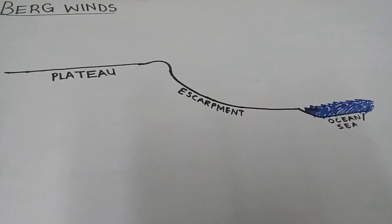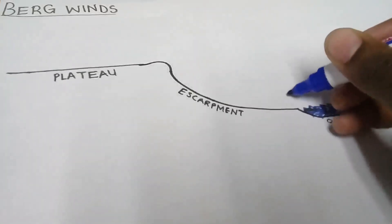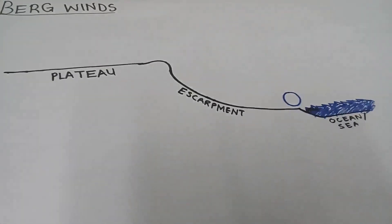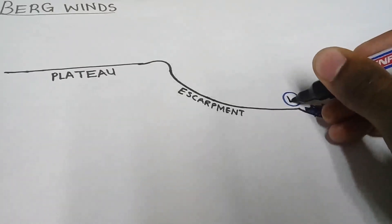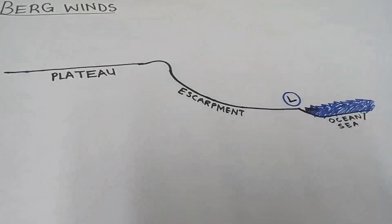And when they move down the escarpment, they continue to heat adiabatically at a lapse rate of one degree per hundred meters until they reach the coastal low, just on the coastal line of South Africa.